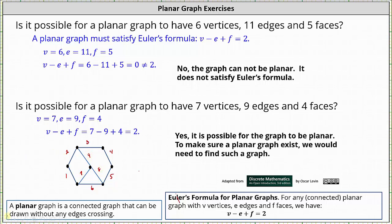And now let's count the faces. We have one, two, three, and four. We have a graph with seven vertices, nine edges, and four faces.